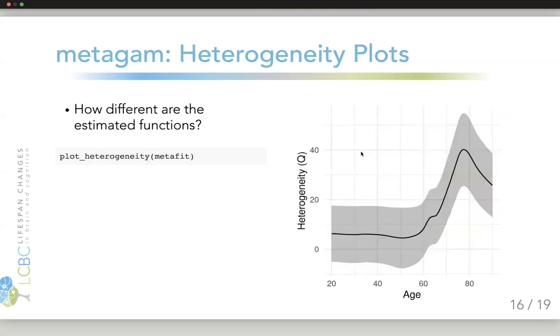We could also look at how different the estimated functions are as a function of some predictor variable, and here of age. That we can do with the plot heterogeneity function. And we get the plot like this.